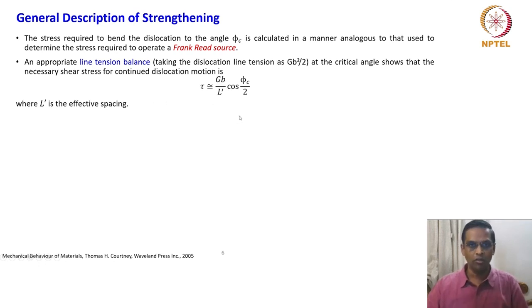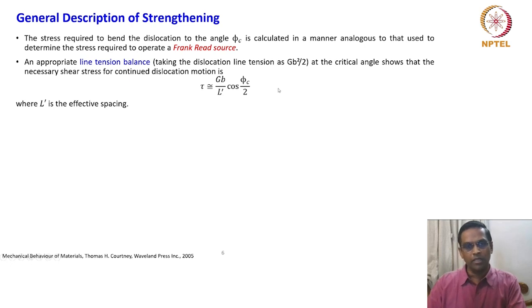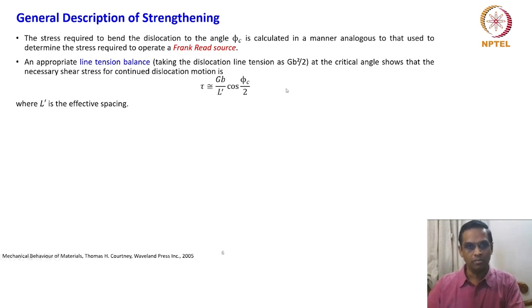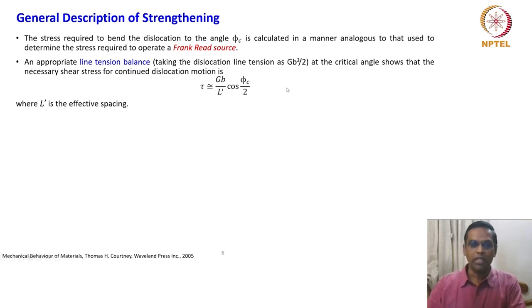At the critical angle, the necessary shear stress for continued dislocation motion is: tau ≈ Gb / (L prime) × cos(phi_c / 2), where L prime is the effective spacing. It is important to note that any expression shown in this domain is semi-quantitative, not fully quantitative — because of the complexity of the problem, most of the expressions in this section are semi-qualitative in nature.